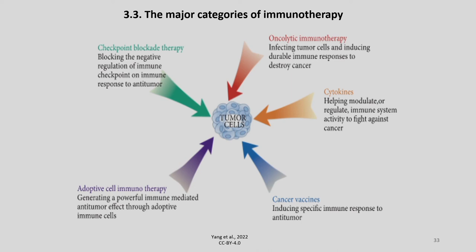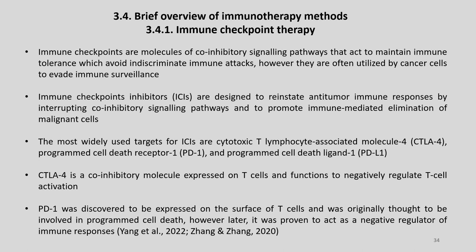Another approach is oncolytic immunotherapy, where infecting tumor cells and inducing durable immune responses to destroy cancer is adopted. Some people also deploy cytokines, which help modulate or regulate immune system activity to fight against cancer. Another approach is adoptive cell immunotherapy. It generates a powerful immune-mediated anti-tumor effect through adoptive immune cells, and one of the very promising ones are cancer vaccines, which act by inducing specific immune response to anti-tumors. This is a brief overview of immunotherapy methods.